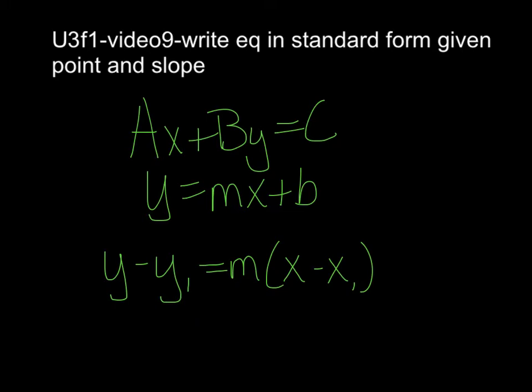Remember when we did slope, we had y2 minus y1 over x2 minus x1 — that's where these points come from. But notice there's only ones, so we only need one point. This x and y do not have little subscripts, so they're going to stay in our equation. Make sure you take good notes — it's a substitution problem.